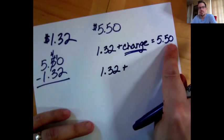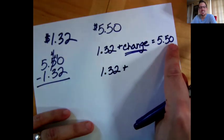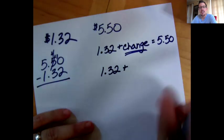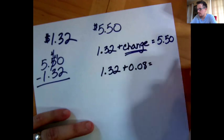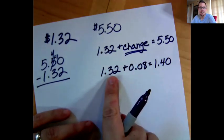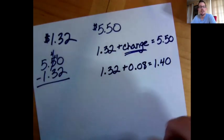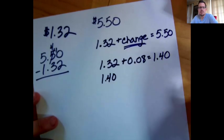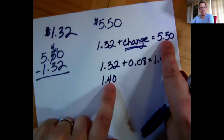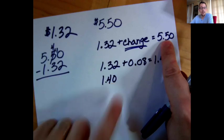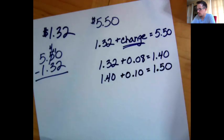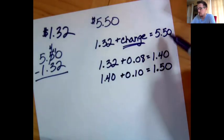I need this last digit — the hundredths column — to become a zero, and right now it's a two. So I add 8 cents: one dollar 32 plus eight cents is one dollar 40. An elementary school student might break it up further — add 3 cents to get 1.35, then 5 cents to get 1.40 — same destination. Now the hundredths digits match. Moving to the tenths column: I have a four and I need a five, so I add 10 cents. That brings me to one dollar and 50 cents.